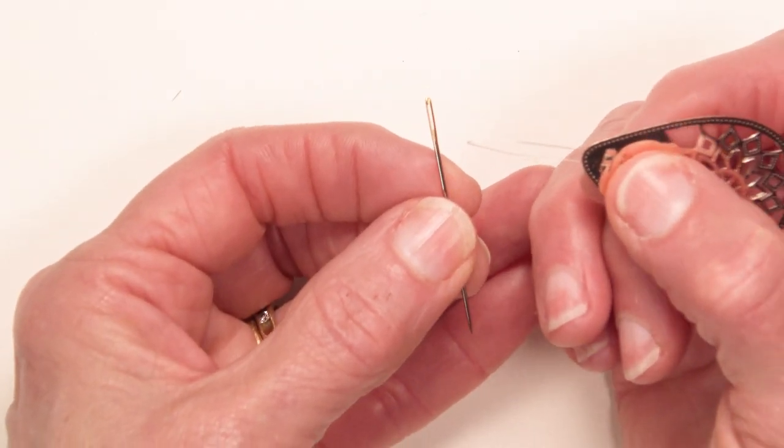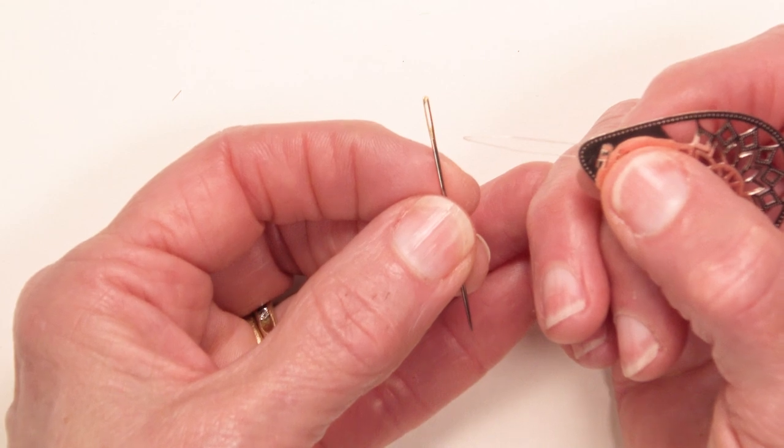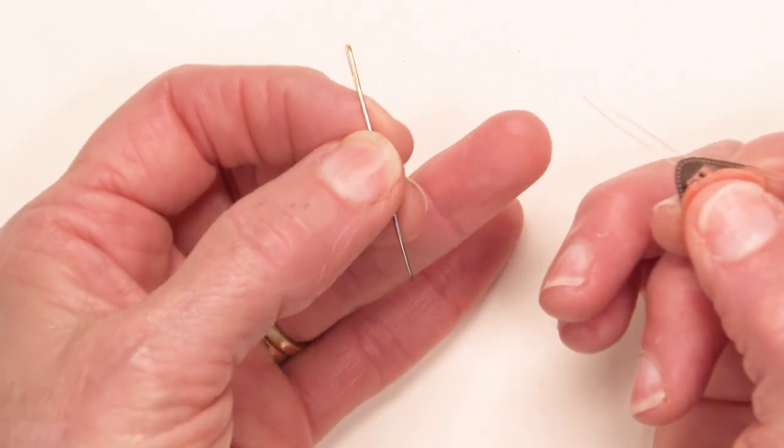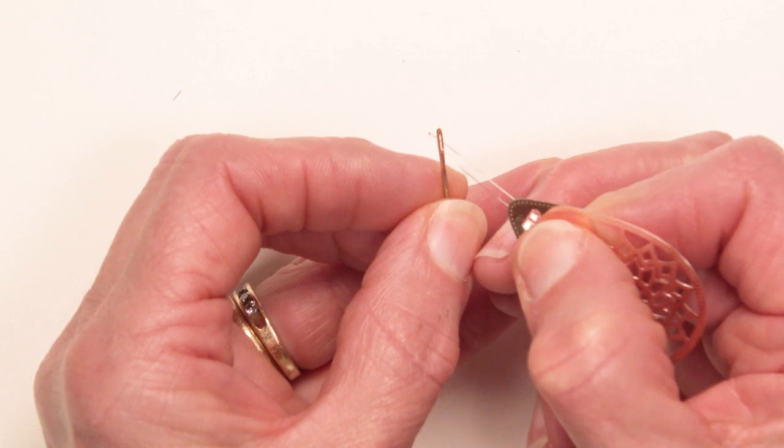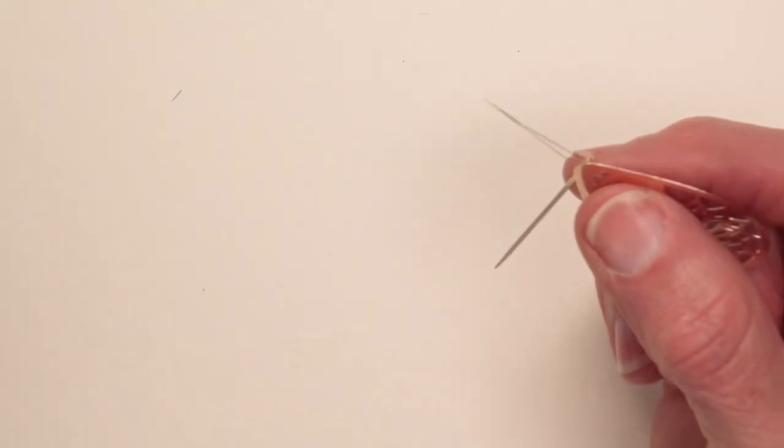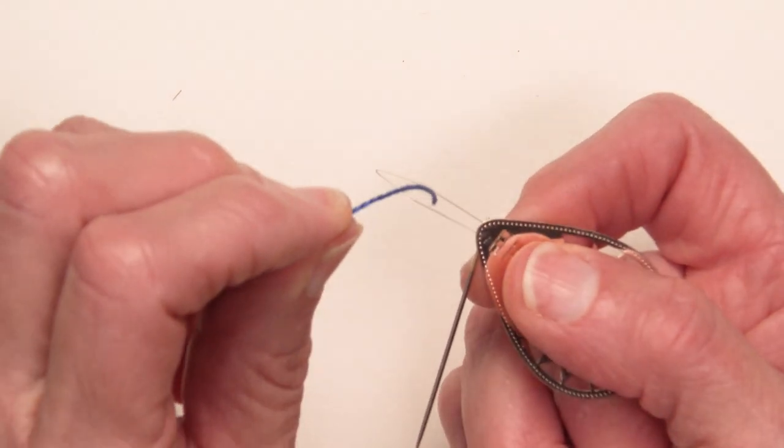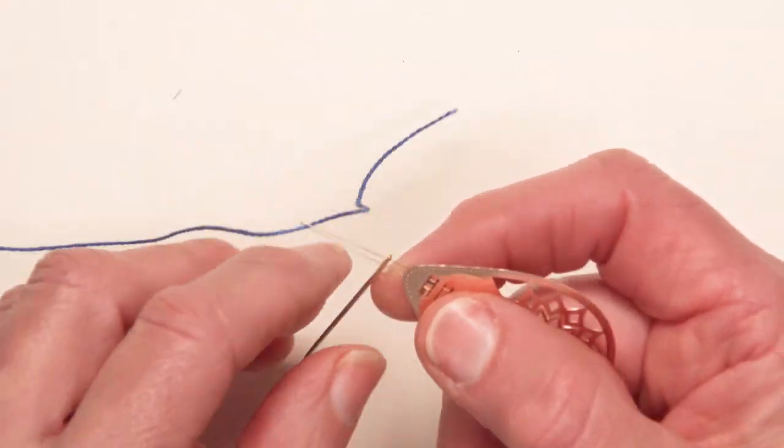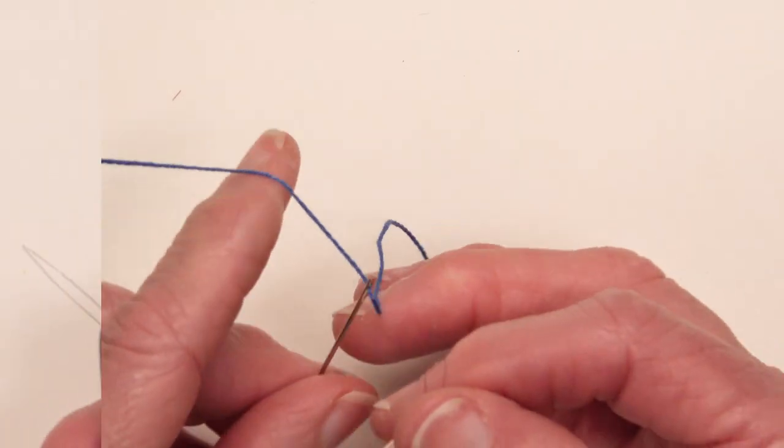This is a Sashiko needle. It is a tulip. It's from the Assorted Short Set. This is the one with the biggest eye. That wire goes easily through there. And I can put the number 8 pearl cotton and that just slides right through.